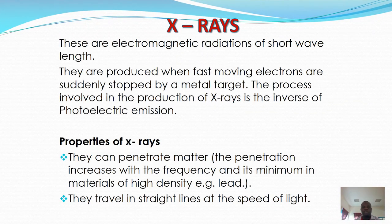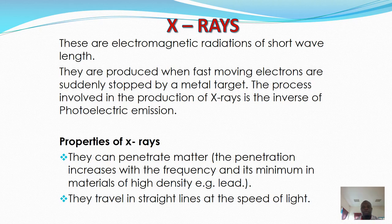Another device which uses thermionic emission is the X-ray tube. X-rays are electromagnetic radiation of short wavelength. They are produced when fast-moving electrons are suddenly stopped by a metal target. The process involved in the production of X-rays is the reverse of photoelectric emission, so it is the opposite movement of electrons which leads to the production of X-rays.